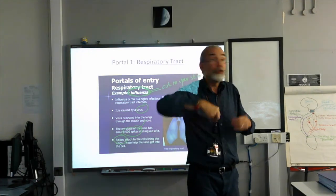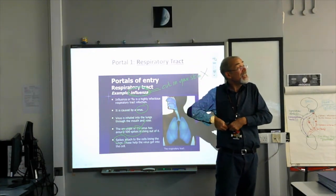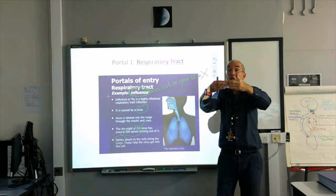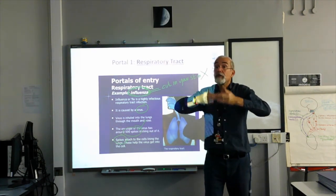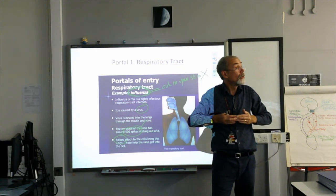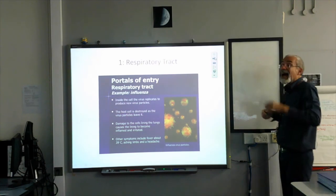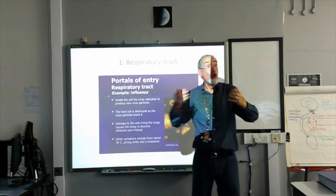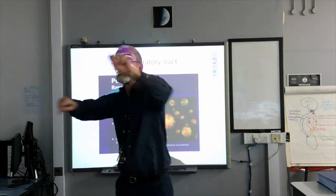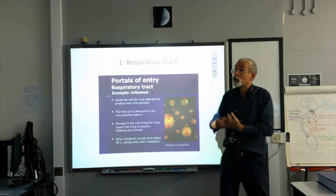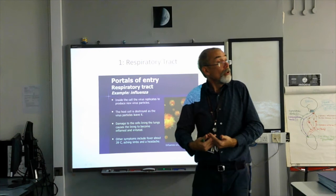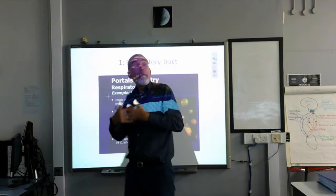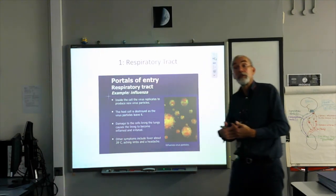Once those spikes have attached to the cells in your lungs, it fools those cells into thinking this is something the cell wants, so the cell allows it to enter. Once it's entered the cell, the viral particle then fools your cell and gets your cell to make more viral particles. Eventually the cell becomes so full of viral particles it literally bursts open, and all those viral particles go in search of new cells to infect — that is how that virus spreads throughout your lungs, damaging the cells.